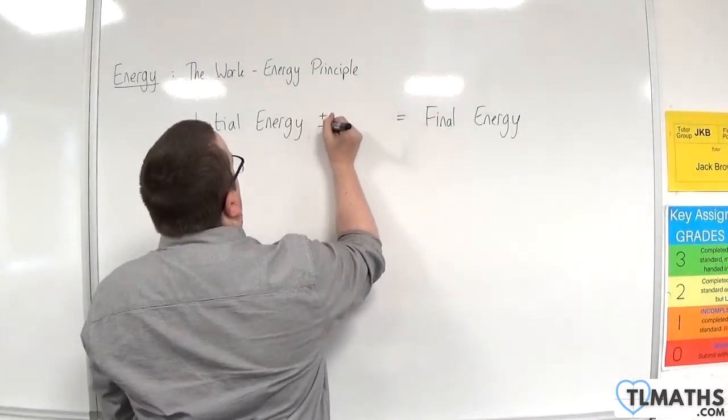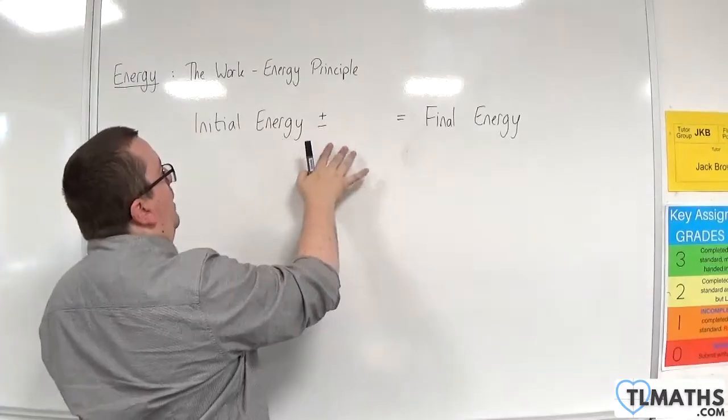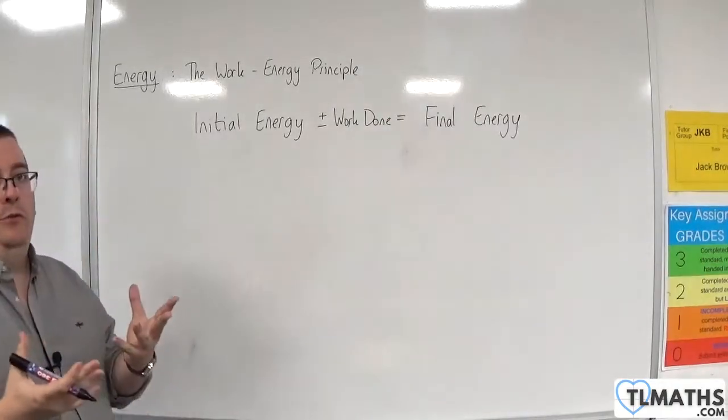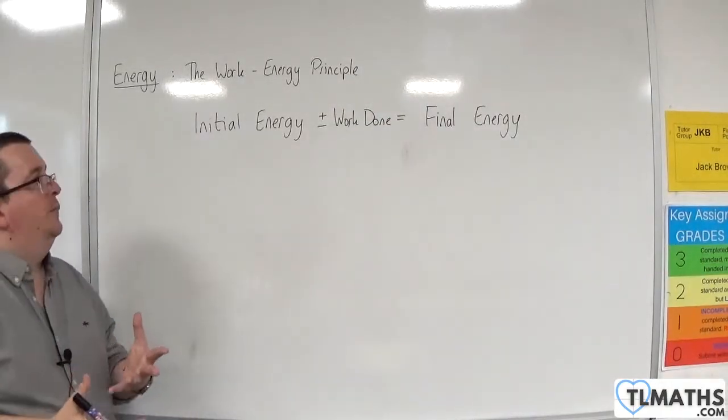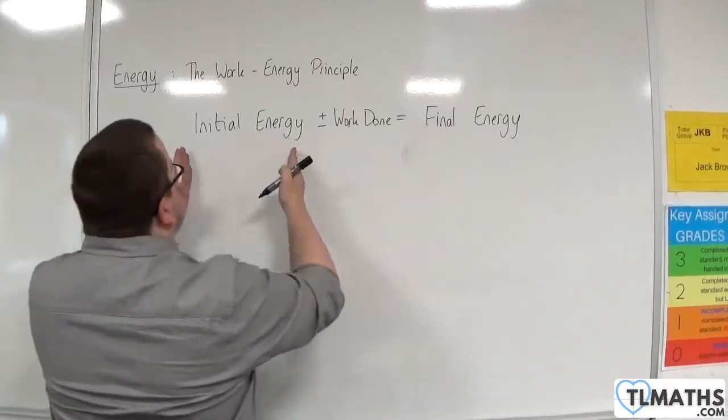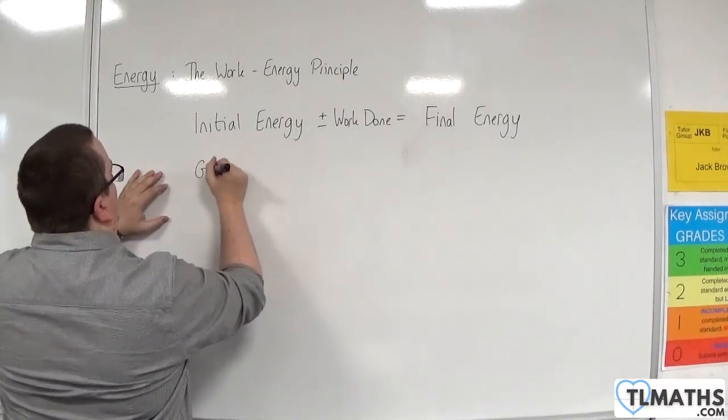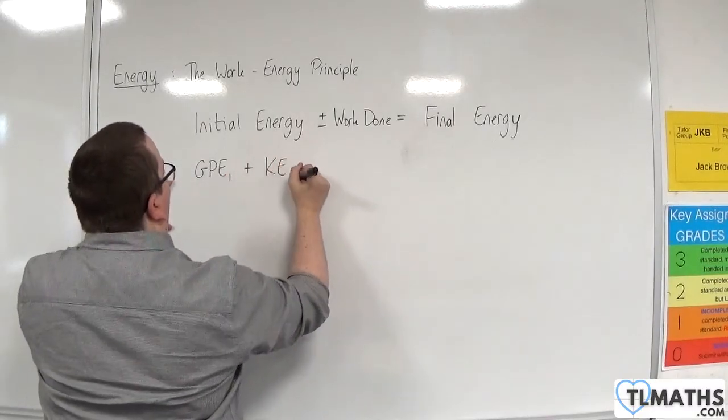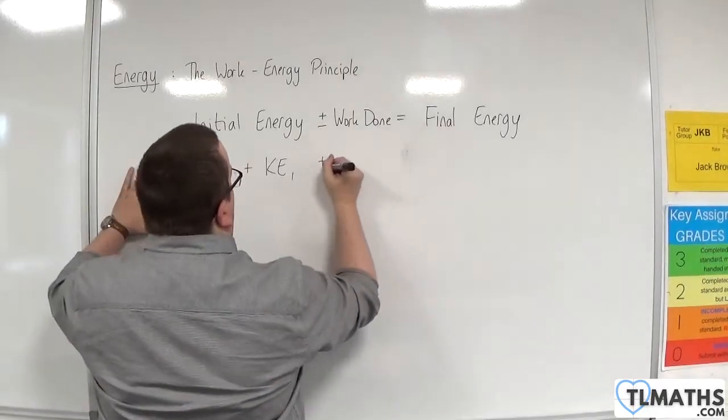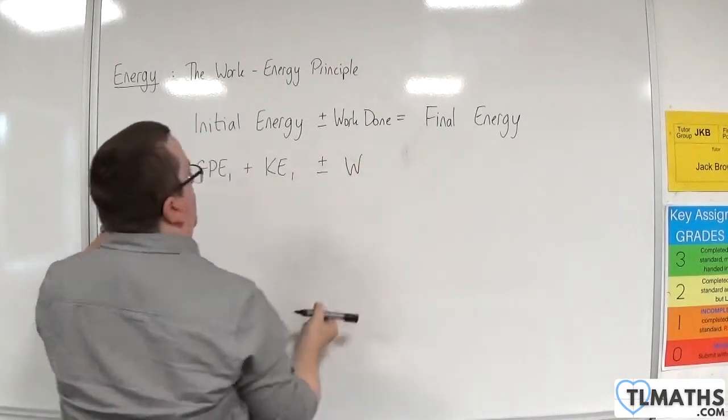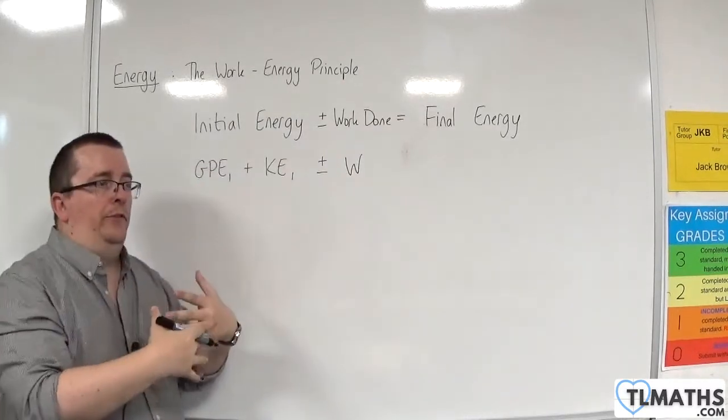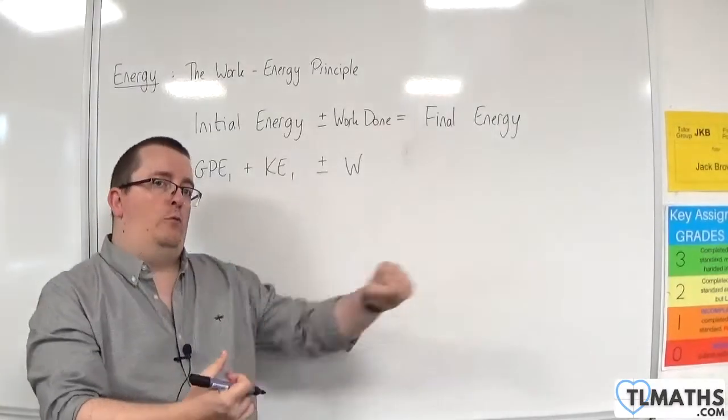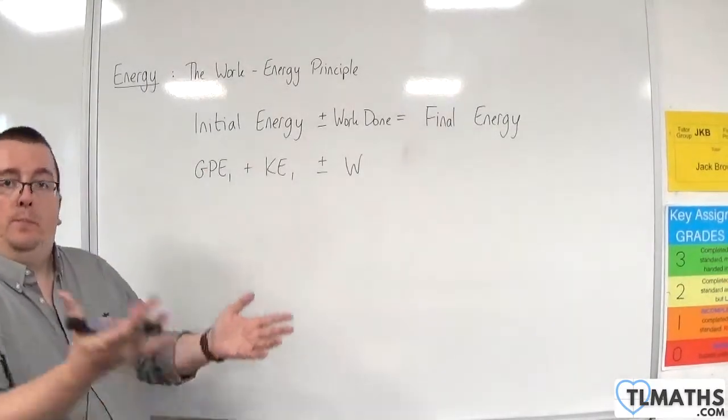So we must have plus or minus the work done by those forces. So the initial energy is the initial gravitational potential energy plus the initial kinetic energy. And then we're going to have plus or minus the work done. And that might be plus the work done by the force pulling the object along, take away the work done by the friction.